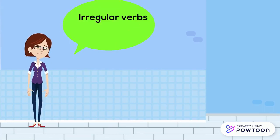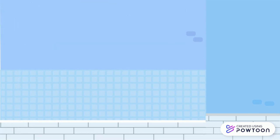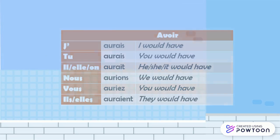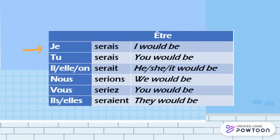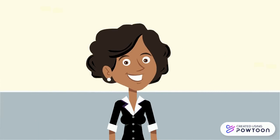As always, there are irregular verbs and they are the same as for the future tense. For 'avoir': j'aurais, tu aurais, il/elle/on aurait, nous aurions, vous auriez, ils/elles auraient. And for 'être': je serais, tu serais, il/elle/on serait, nous serions, vous seriez, ils/elles seraient. Bon travail! Au revoir!